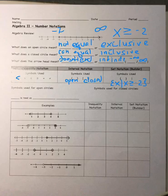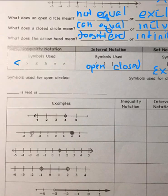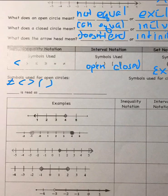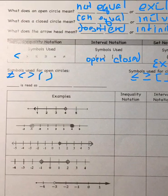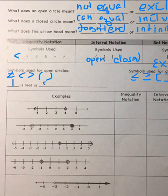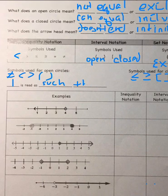Symbols used for open circles: not equal (equal sign with a slash), less than, greater than, and parentheses. Symbols used for closed circles: less than or equal to, greater than or equal to, brackets, and the equal to sign. That straight line in set builder notation is read as 'such that' — it's just a shortcut meaning 'such that.'